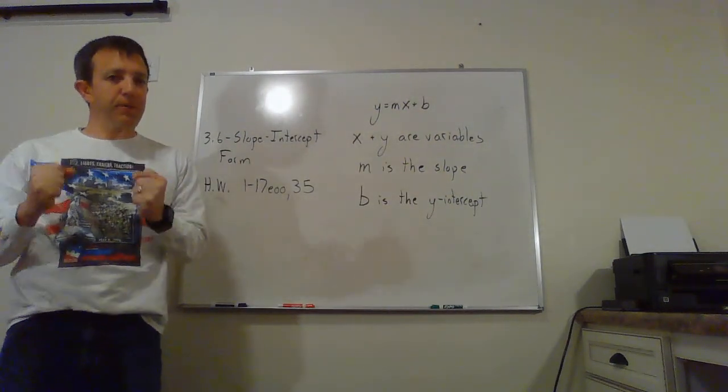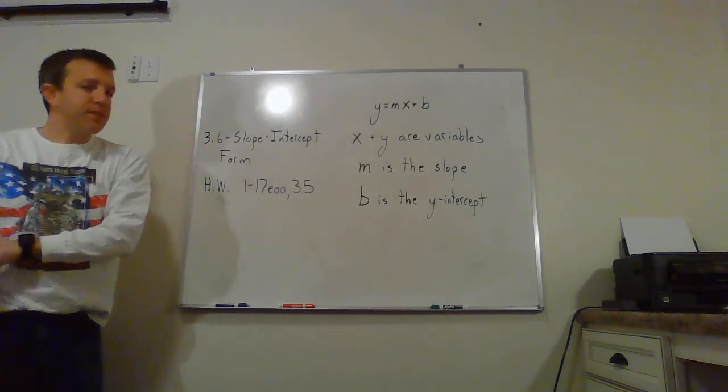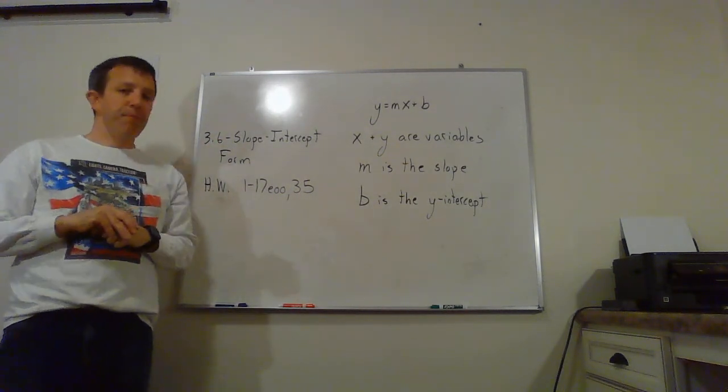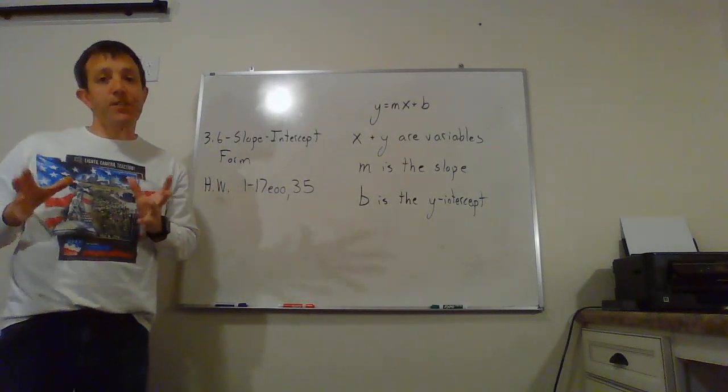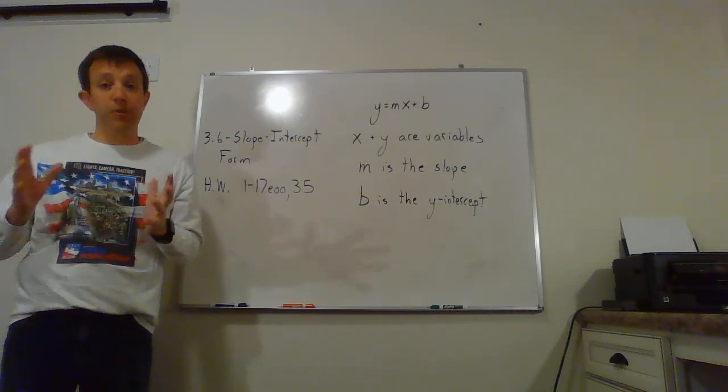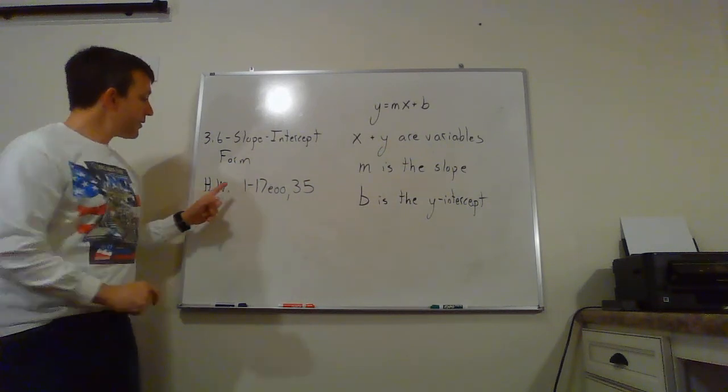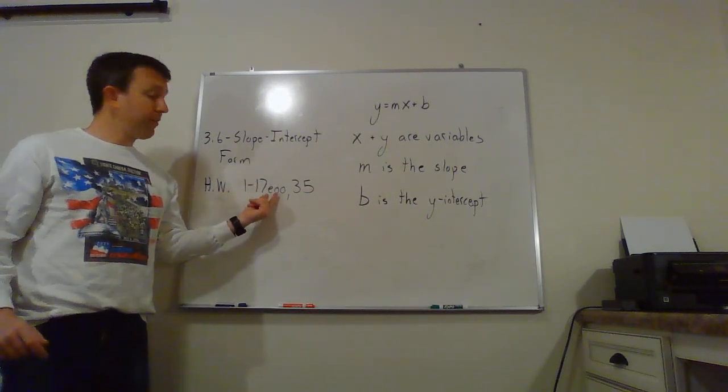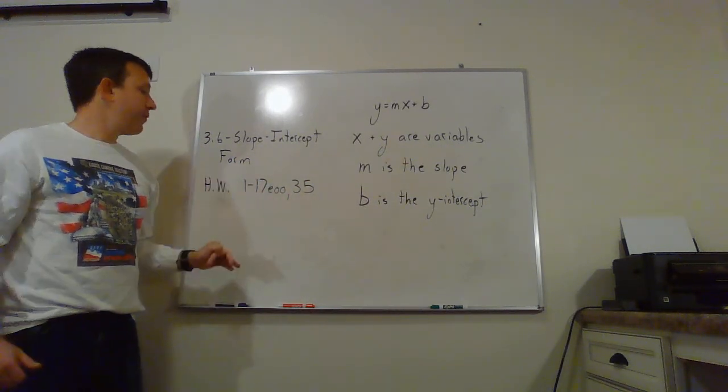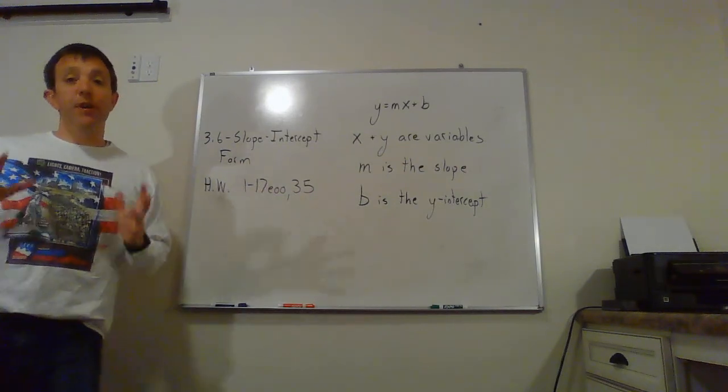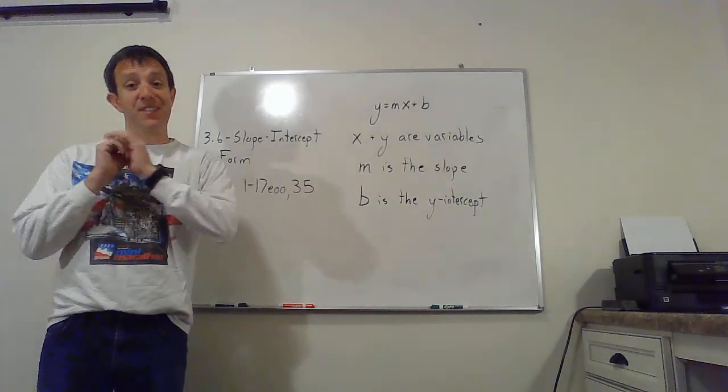Welcome back to Introduction to Algebra, where we're going into section 3.6, the slope-intercept form of a line. In this section, we're not actually doing the whole section, we're only doing some of it. So your homework, if you're actually taking my class, is number 1 through 17 every odd, and then number 35. So you don't have too much here, just a little break.